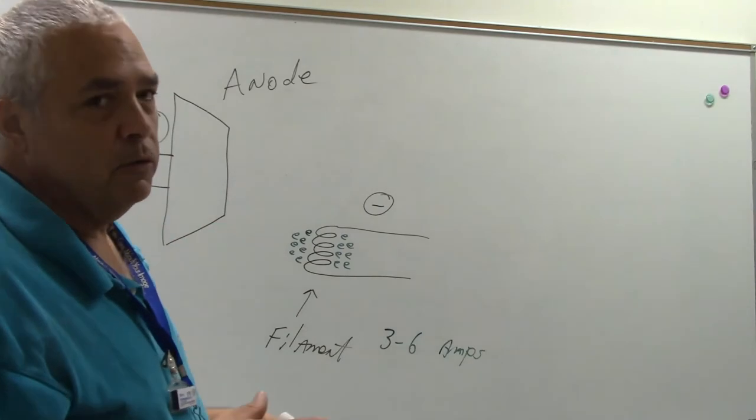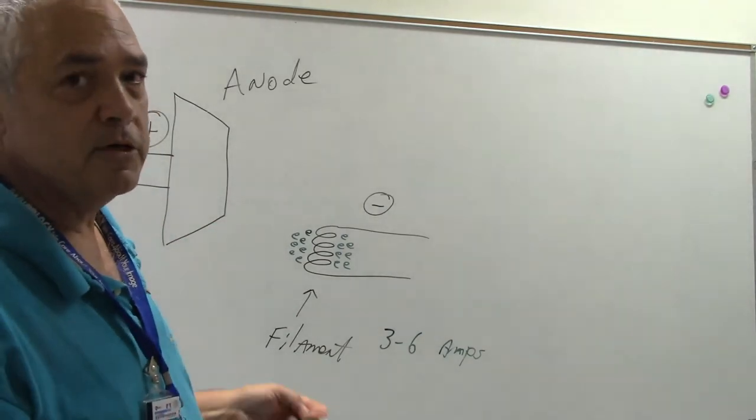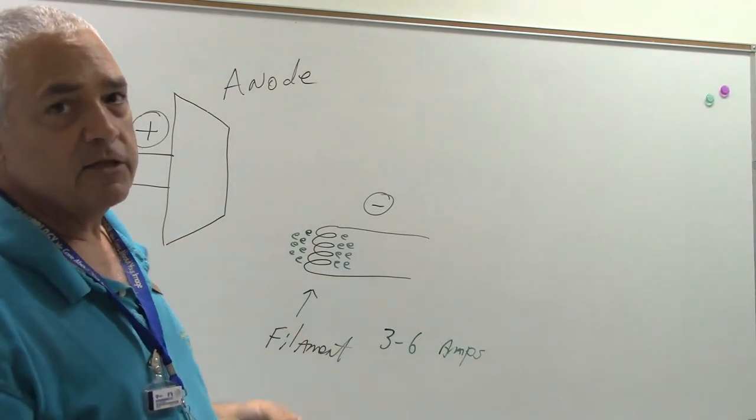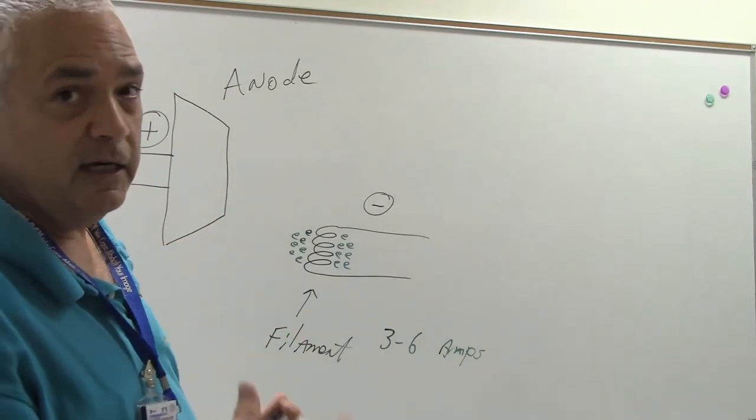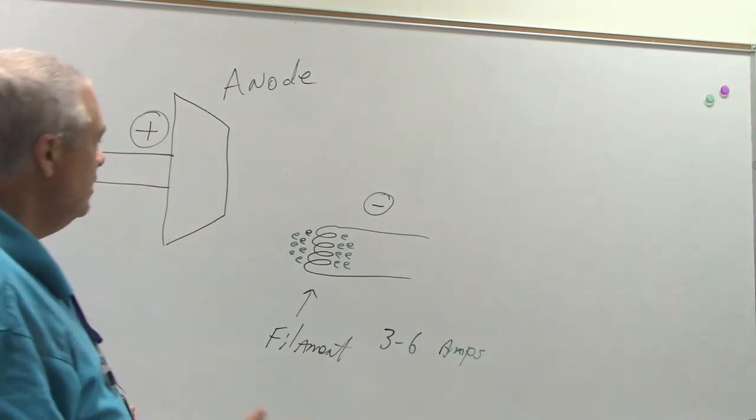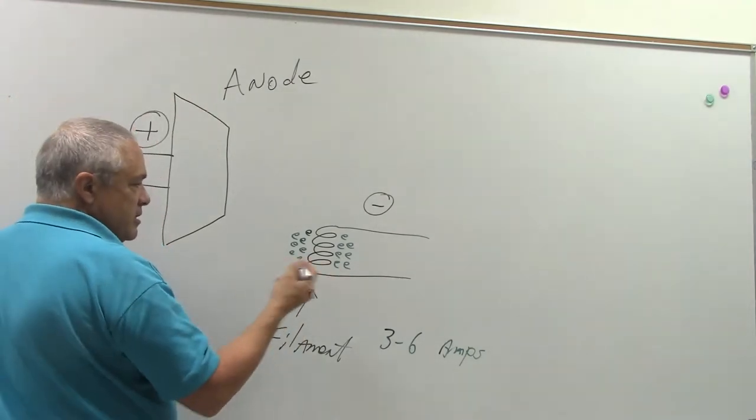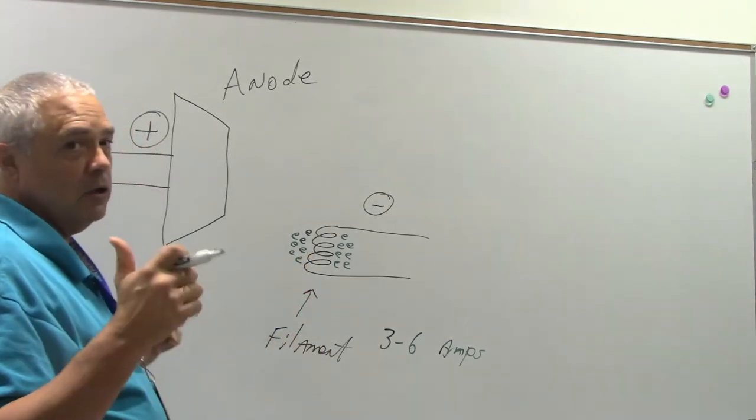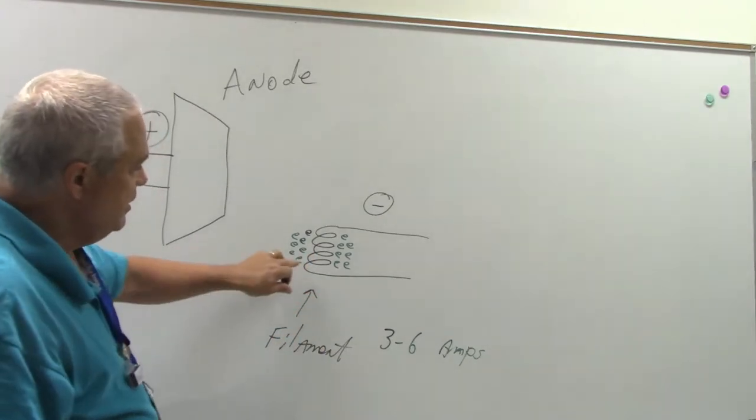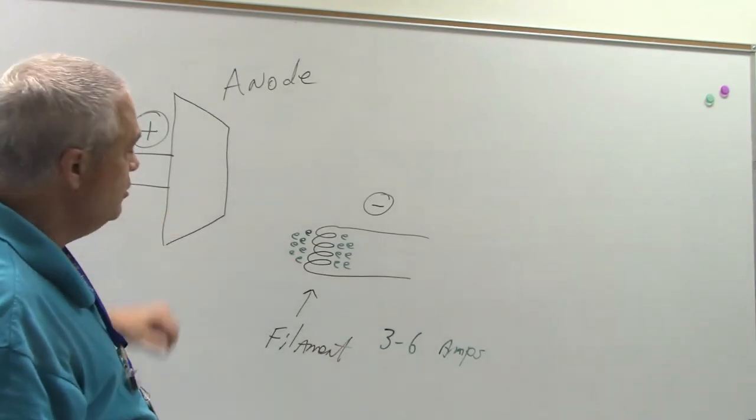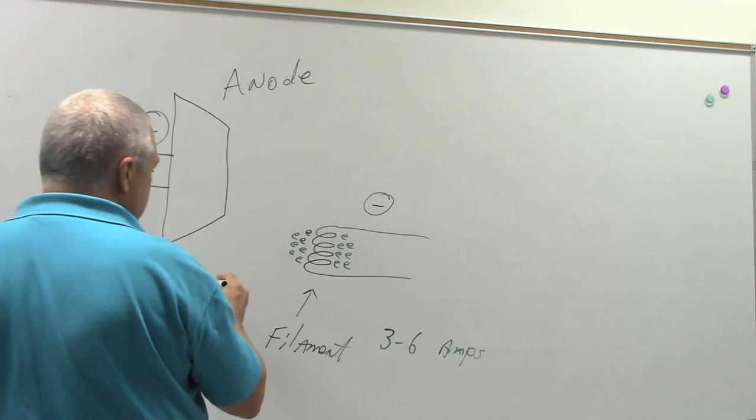So, 40 plus 40, because remember, since opposites attract, 40 plus 40 is 80. That's going to give me my total of 80 kVp. 80 kilovolts. So, the deal is this. When I go to close my circuit, these electrons are going to be attracted to this anode with a force of 80 kilovolts.